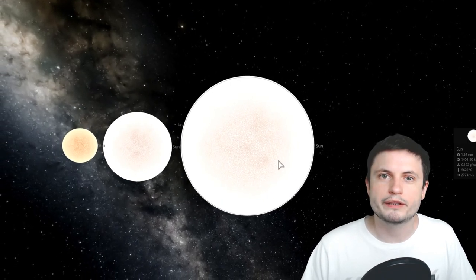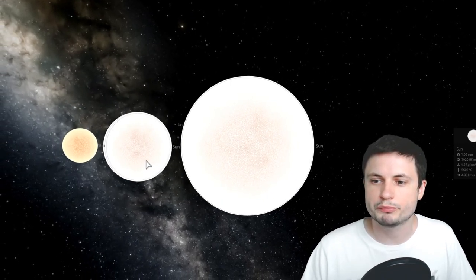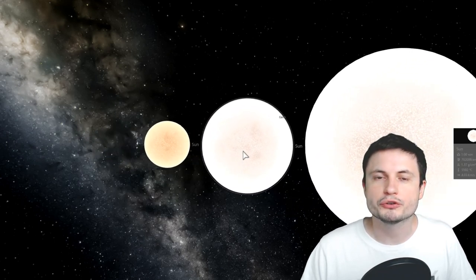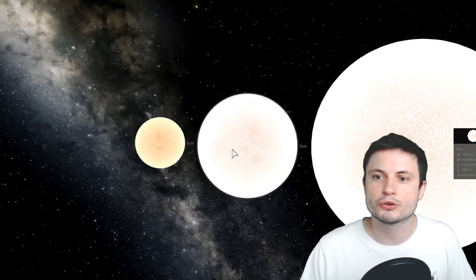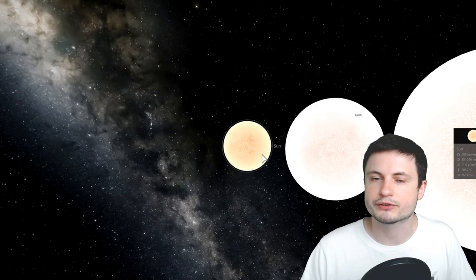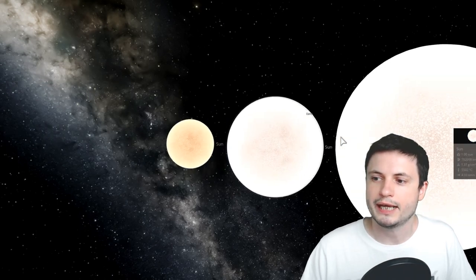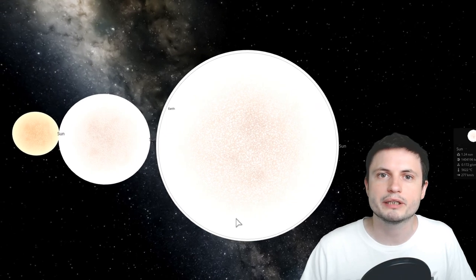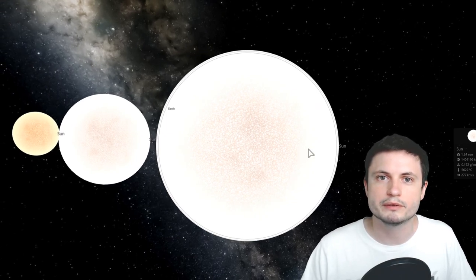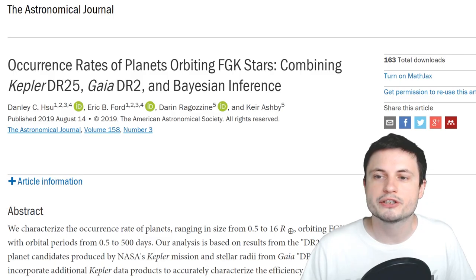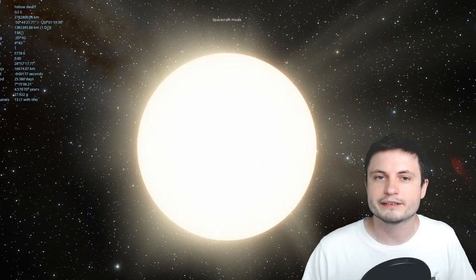And the same thing with the actual star. So this would be our own sun right here, but they've also taken a look at the so-called K-type stars, slightly smaller than our sun, and the so-called F-type stars, which are slightly bigger than our sun. Which is why the title of the paper mentions the FGK stars. FGK is basically the spectrum of the stars that they emit. Our own sun is known as a G-type star.